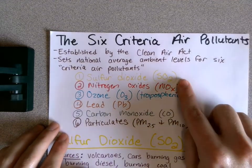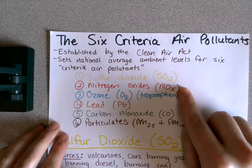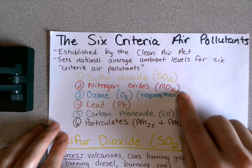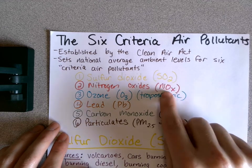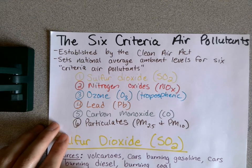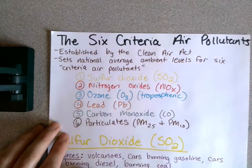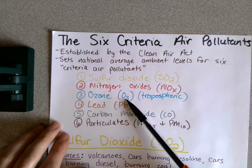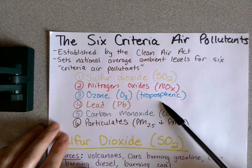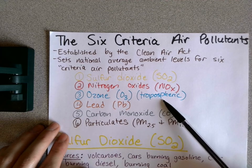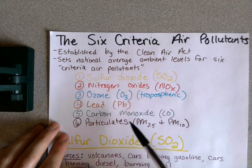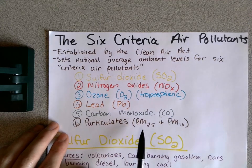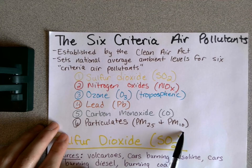So here they are. First one: sulfur dioxide, nitrogen oxides — like NO2, NO3, or NO, just a general class of them. Ozone is O3 and it's tropospheric ozone, which is known as the bad ozone. Lead is Pb, carbon monoxide is CO, and then particulates — there are two different types: PM2.5 and PM10.